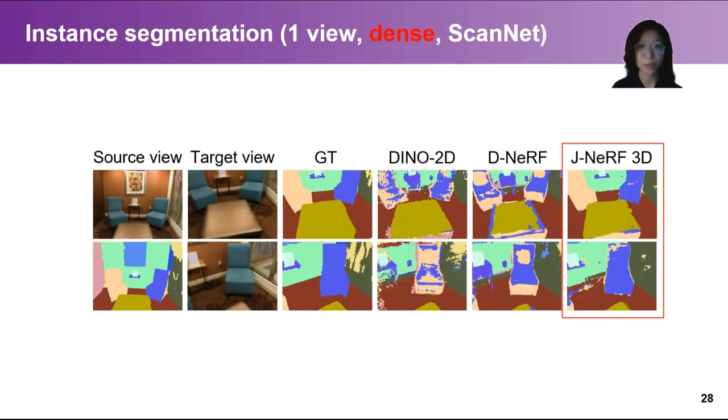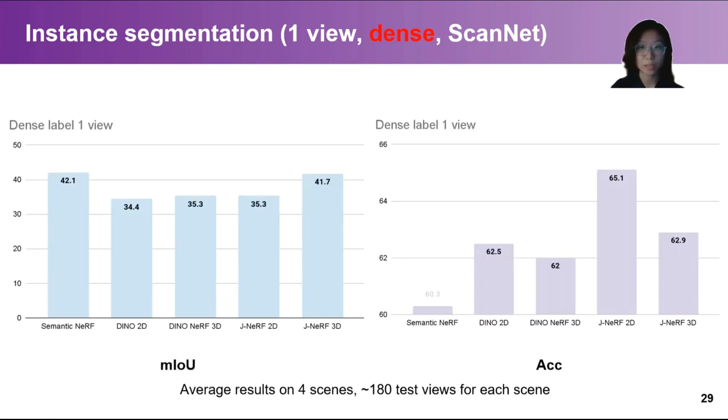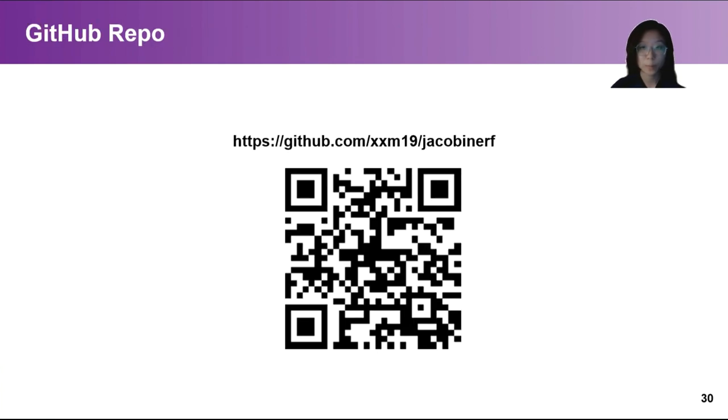Jacobi NERF can also achieve comparable results on dense instance segmentation label propagation. Quantitative results also show that Jacobi NERF achieves comparable performance. For more details about implementation, you may refer to our GitHub repo. Thank you.